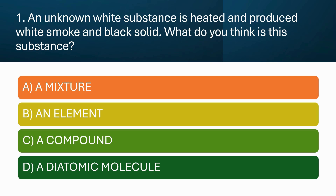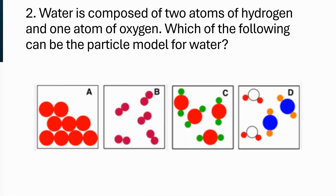Water is composed of two atoms of hydrogen and one atom of oxygen. Which of the following can be the particle model for water?